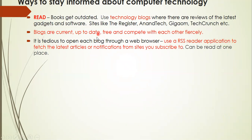Ways to stay informed about computer technology: reading is one way, but books get outdated, so reading books is not the answer. Use technology blogs — there are technology blogs or sites like The Register and others. Blogs are current, up-to-date, free, and compete with each other fiercely, so you get good information. It is tedious to open each blog through a web browser, so use an RSS reader application to fetch the latest articles or notifications from the sites you subscribe to — so you can read everything in one place.